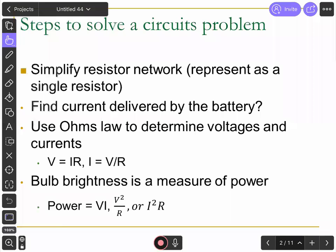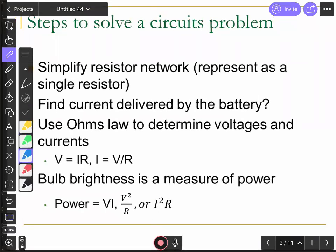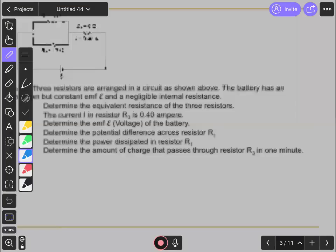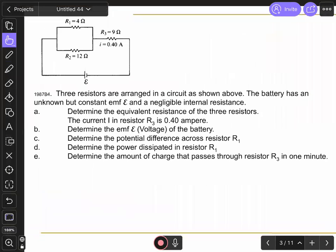When you're trying to solve a circuits problem, typically you want to approach it in a couple steps. The first is you want to simplify the resistor network, so whatever resistors you have, combine them into just a single resistor. Once you've done that, you can find the current that's delivered by the battery. Once you've done that, then you can use various forms of Ohm's law, V equals IR or I equals V over R, to determine voltages and currents in different resistors.